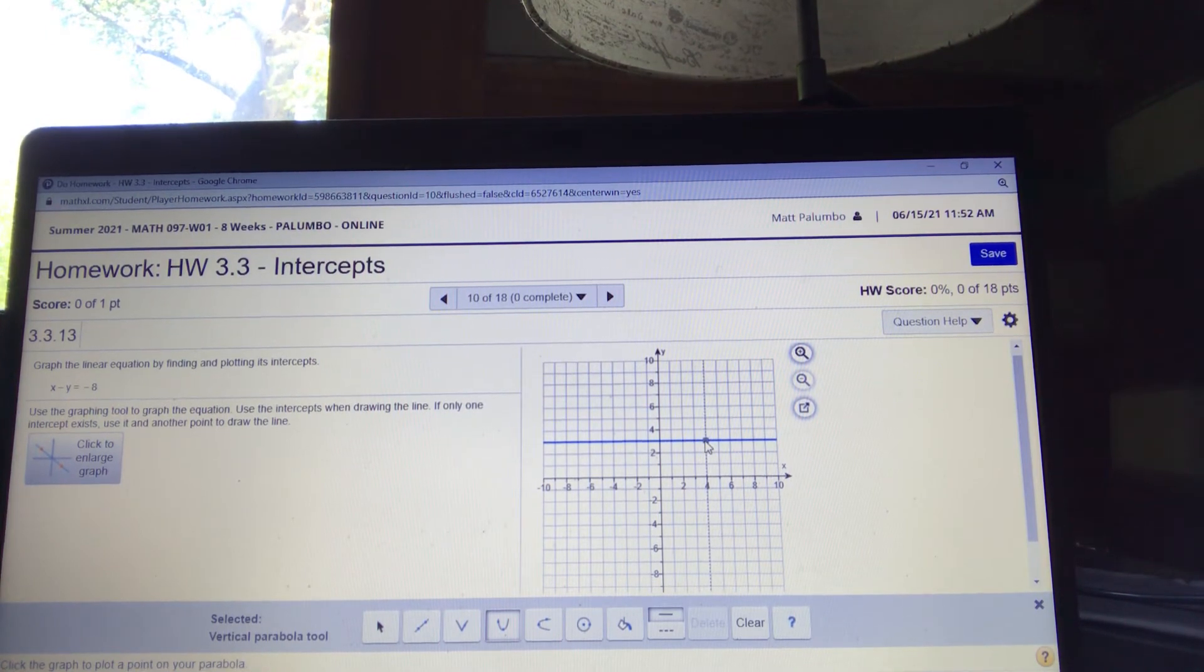Now I need to click on a second point. And I have found five, four. One, two, three, four, five. And up one, two, three, four. Boom. That's my parabola right there.